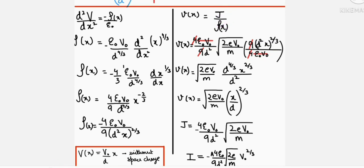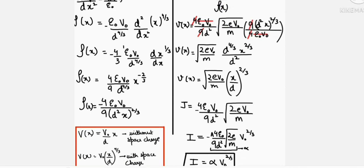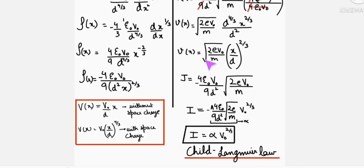J by rho - velocity of electrons will equal J by rho. We know the value of J and rho, so from here we get the velocity of electrons equals under root 2 E V naught by M, times X by D raised to 2 by 3.